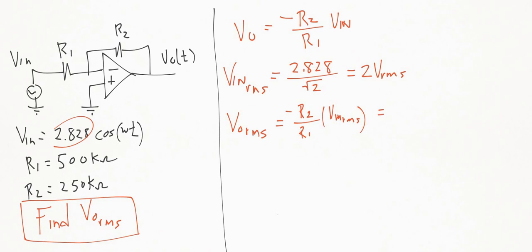And now we can plug in the values here. So we have Vout RMS equal to minus 250k divided by 500k times VN RMS, which is 2.